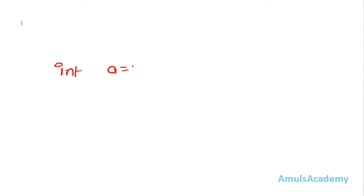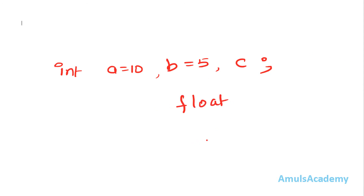We can also do multiple declarations with initialization in the same line, for example: int a equals 10, b equals 5, c. We discussed three data types: integer, float, and character. For float we use the keyword float, and for character we use char. We will discuss more about data types in the next tutorial. For now we will concentrate on variables.